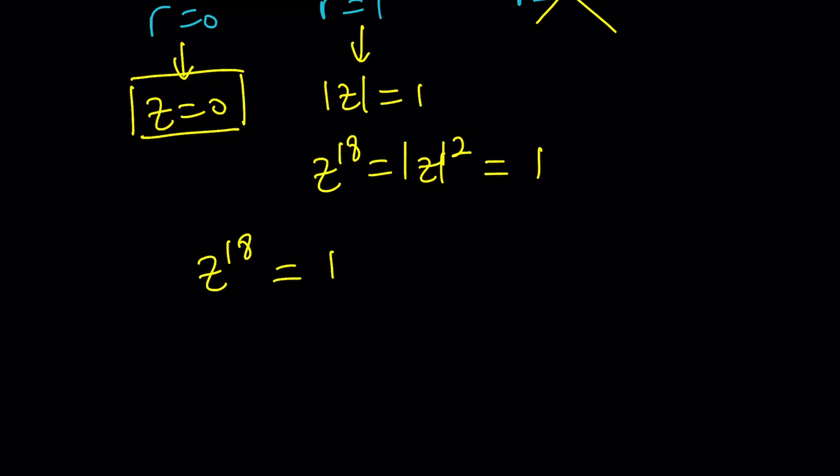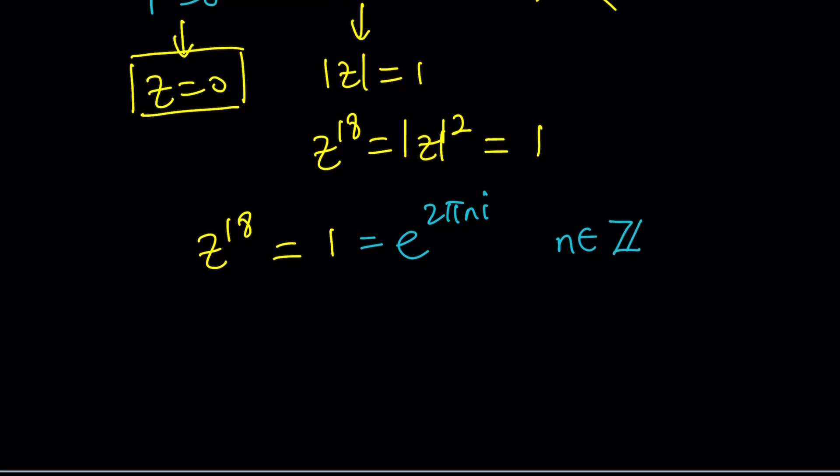So here's what we're going to do. We're going to write the 1 as e to the power 2 pi n i, where n is an integer. And we'll probably use the non-negative integers here. But by dividing both sides, the exponents, by 18, Z can be written as e to the power 2 pi n i over 18. 2 goes into 18 nine times, and we can write this as e to the power pi n i over 9. Awesome.